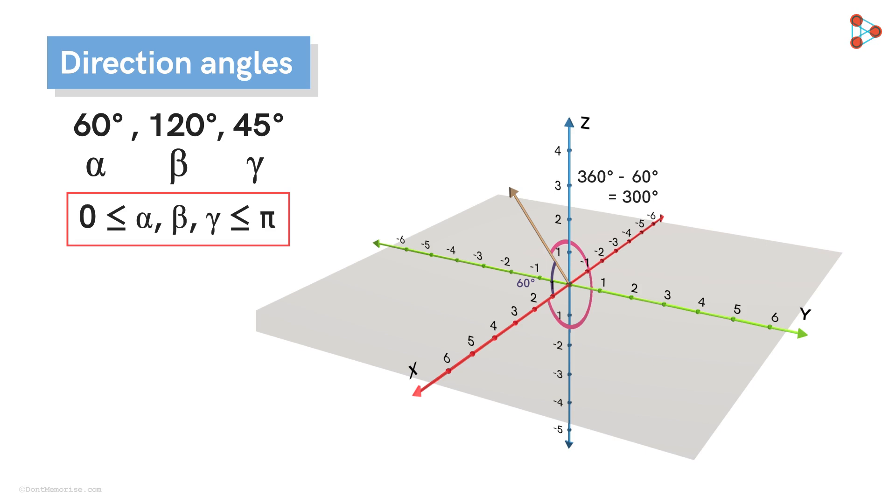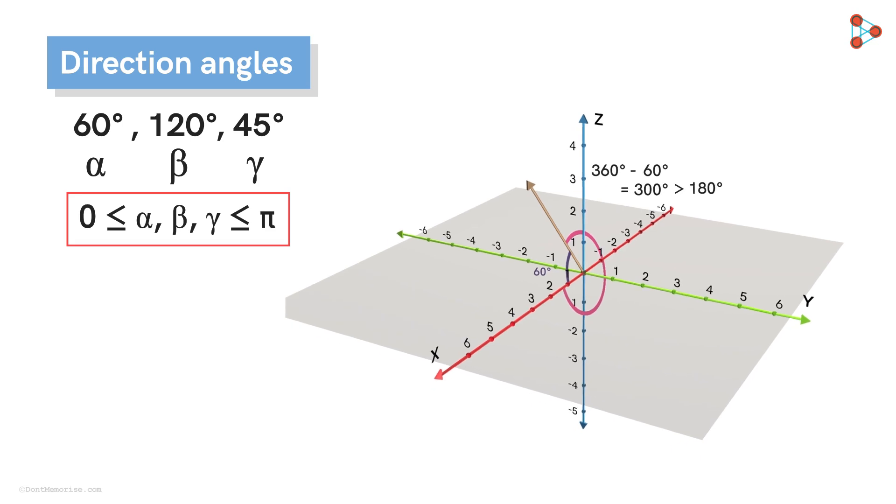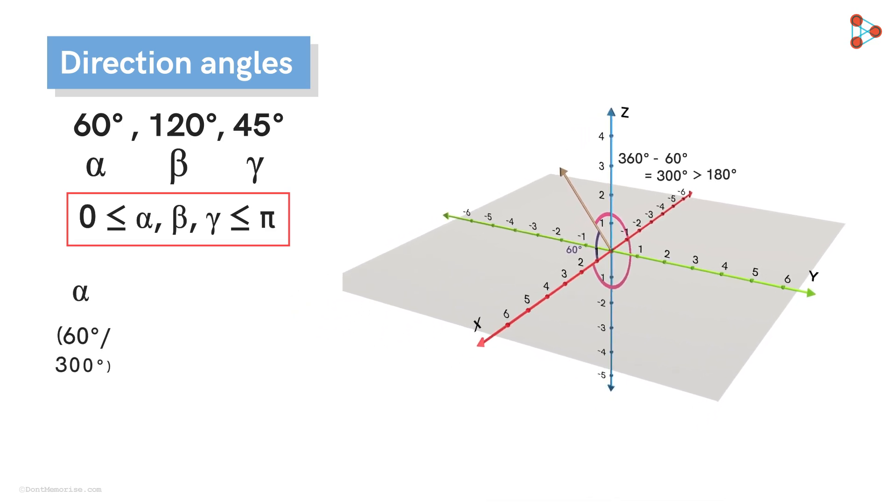And that angle will be 360 degrees minus 60 degrees. We will get a reflex angle, meaning greater than 180 degrees or pi. So if it was not for the condition, alpha can be either of these two angles.